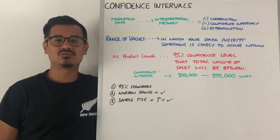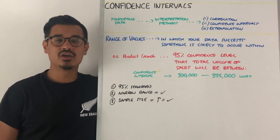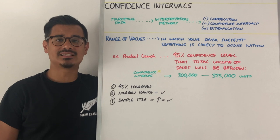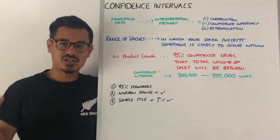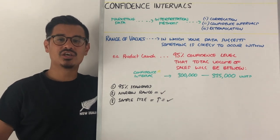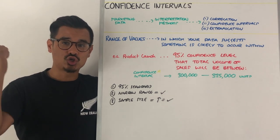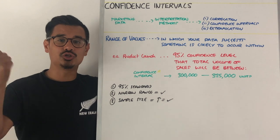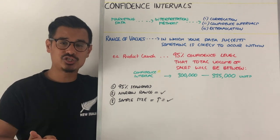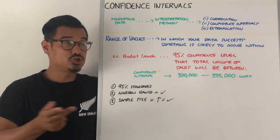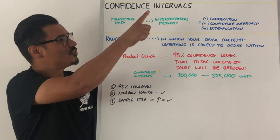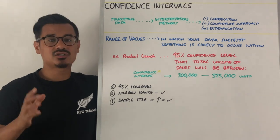Let's have a session on confidence intervals. If you have marketing data, you will need to interpret that marketing data. In order to do that, you need interpretation methods. So you could use correlation, you could use extrapolation, or as in this video, you could use confidence intervals.